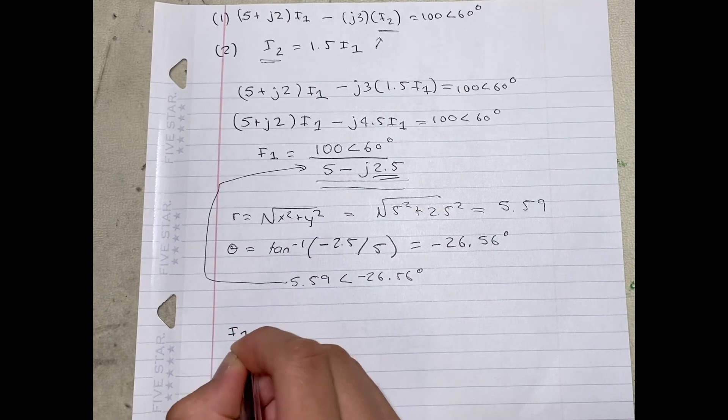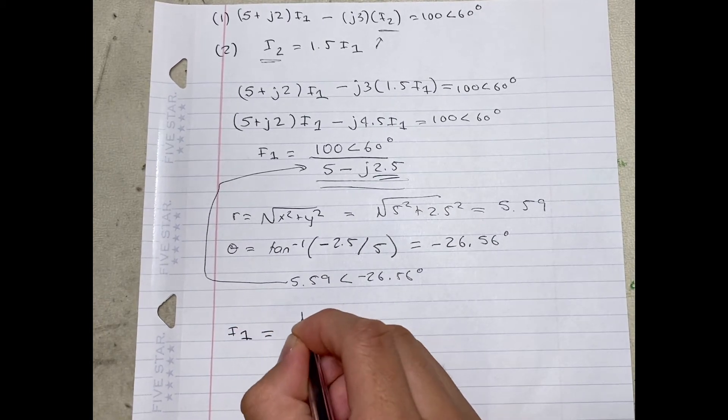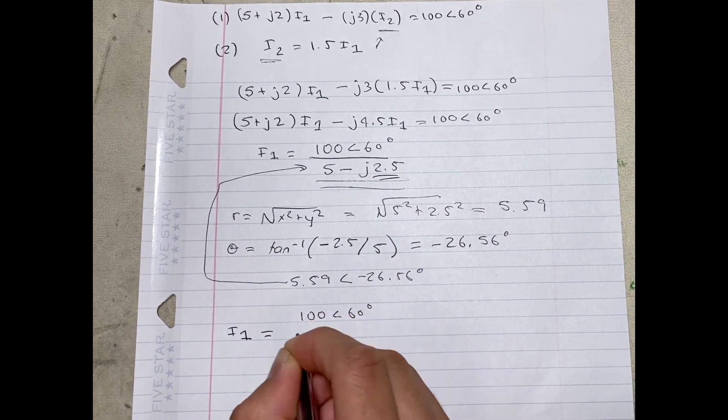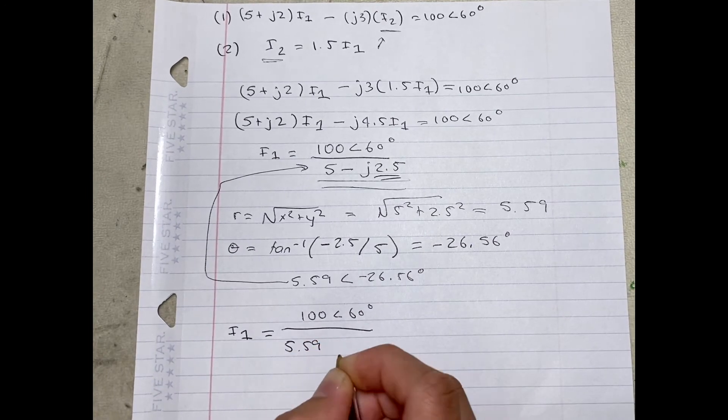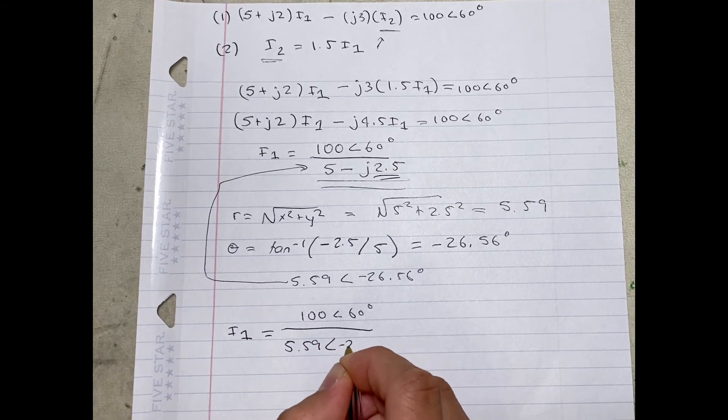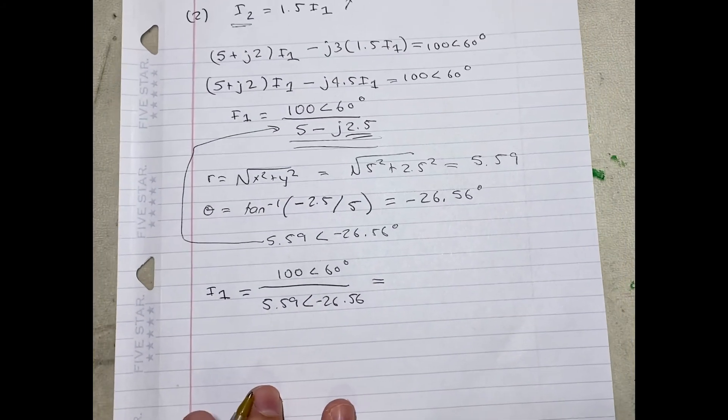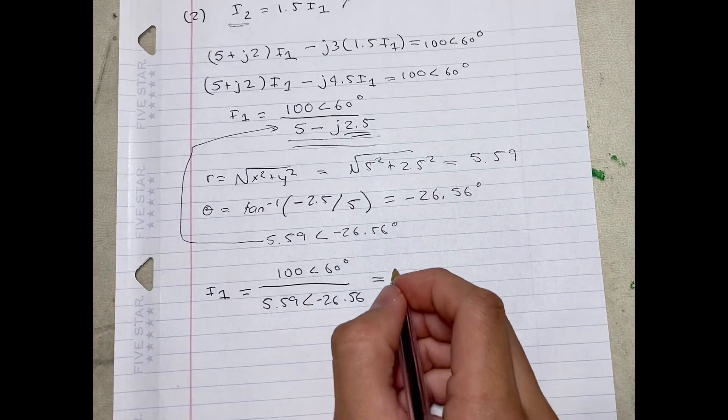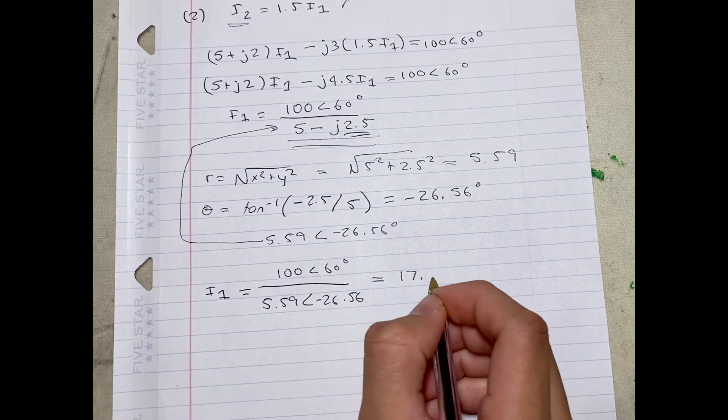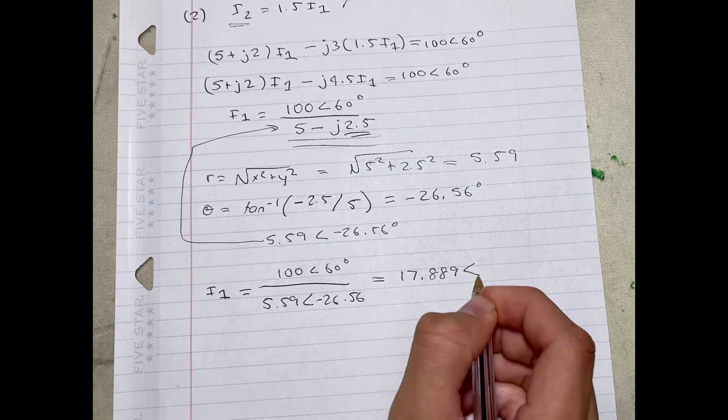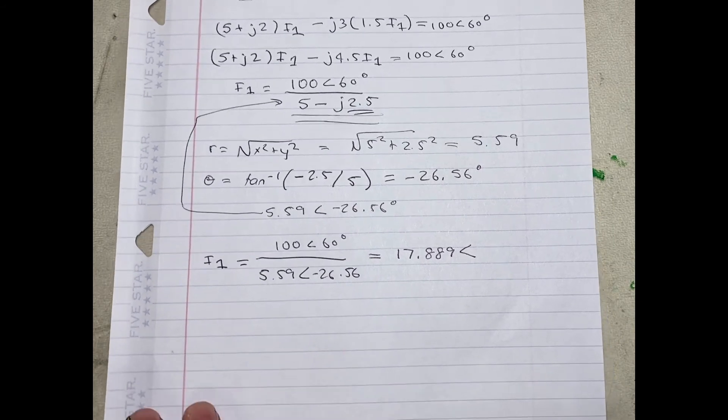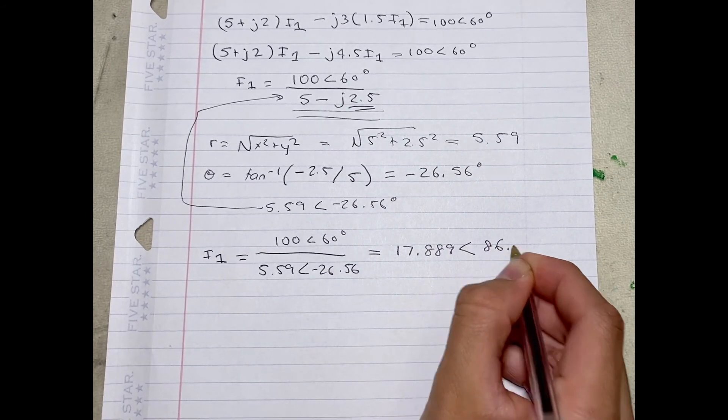We can now rewrite this into the original I1 equation as 100 angle 60 degrees divided by 5.59 angle negative 26.56 degrees. This will be simplified down to equal 17.889 angle 86.56 degrees.